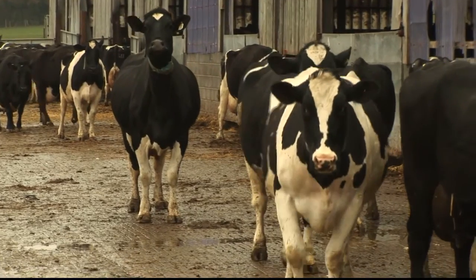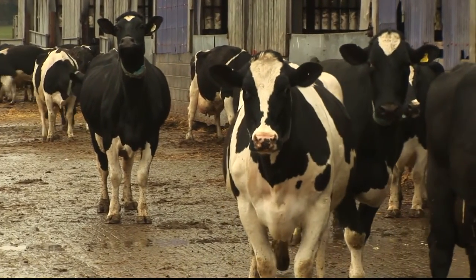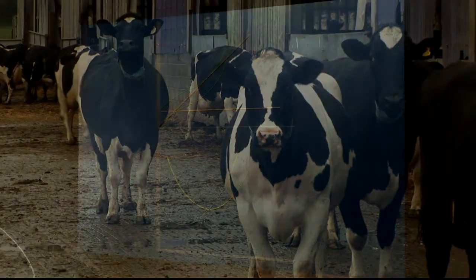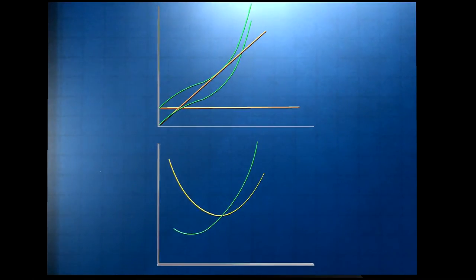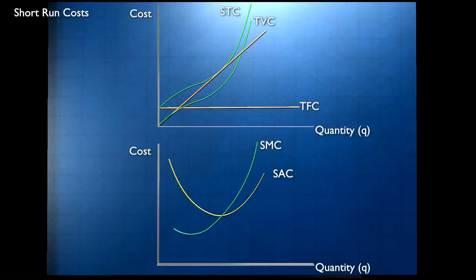Now what are the costs of the firm in the short run? We've already looked at that. We've made the distinction between fixed and variable costs, added them up to get total costs in the short run, and then we derived a marginal and an average cost from our total costs. And you remember that the shapes of these curves are determined by the law of diminishing returns.